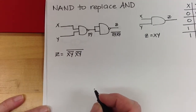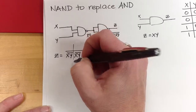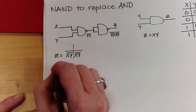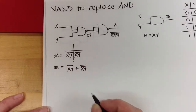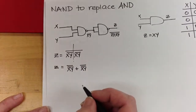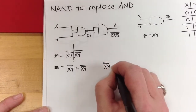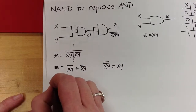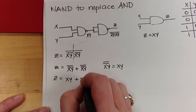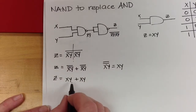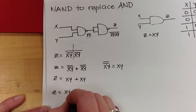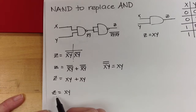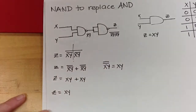To simplify, we DeMorganize: split and change the sign, giving Z equals X AND Y double-bar OR X AND Y double-bar. Those double bars are NOT-NOT, so that cancels to X AND Y. Then Z equals X AND Y OR X AND Y, and since X AND Y OR X AND Y equals X AND Y, we get Z equals X AND Y. So this combination is in fact equivalent to an AND gate.